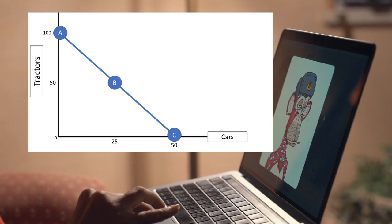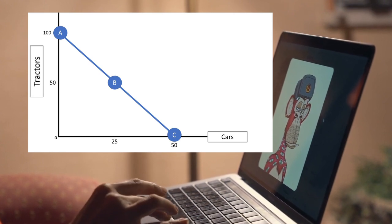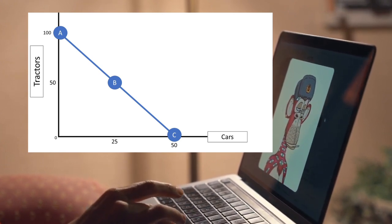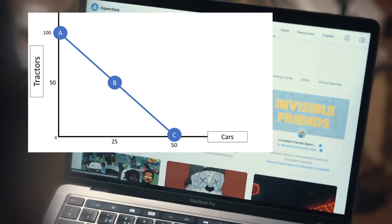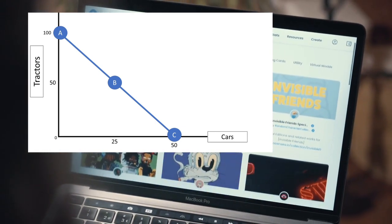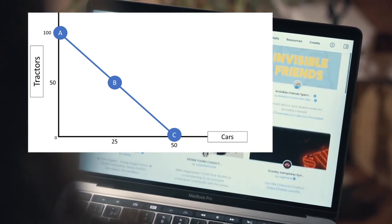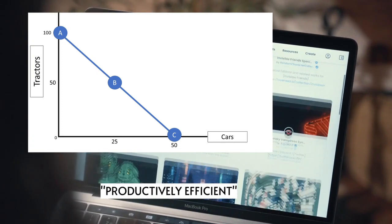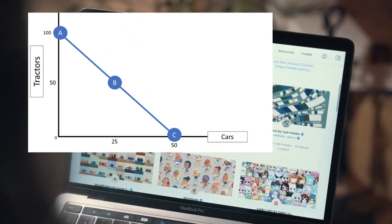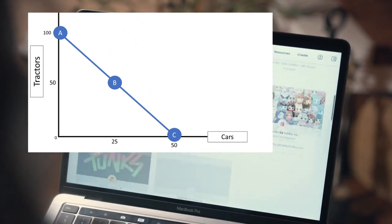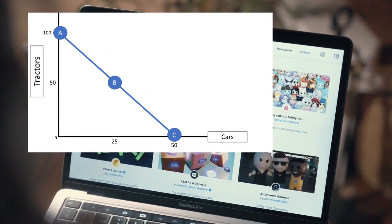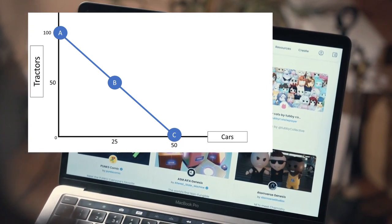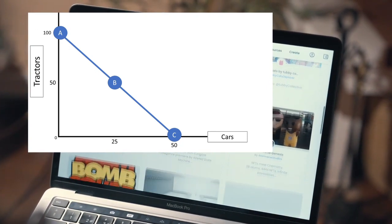Importantly, all points on the line are potential output combinations. All PPC models use the same logic. No matter what is being produced, any point along a PPC is considered productively efficient, which means the producer or nation is using all of the productive resources as efficiently as possible. The combination of goods they choose to produce can be influenced by preference or market demand.